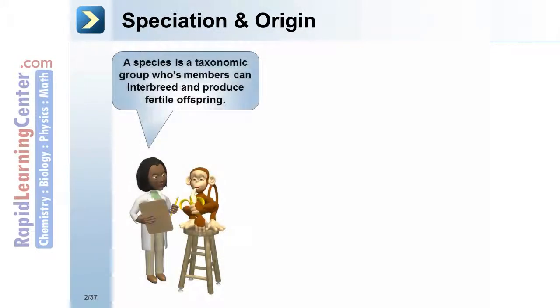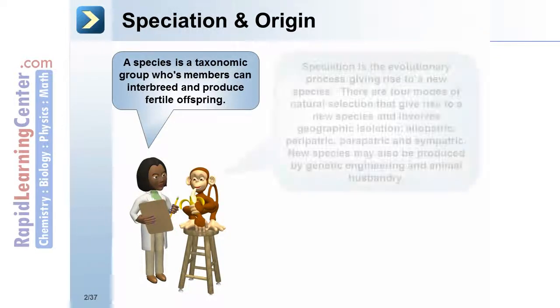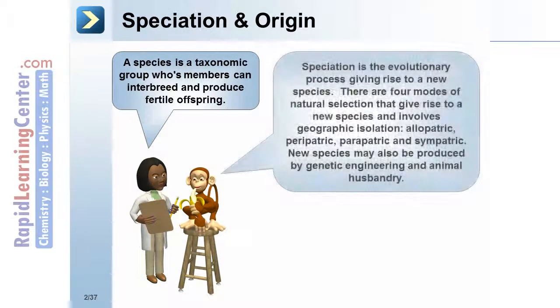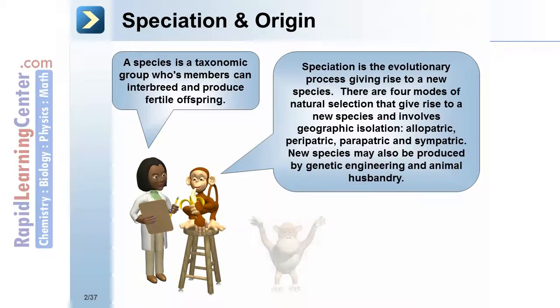A species is a taxonomic group whose members can interbreed and produce fertile offspring. Speciation is the evolutionary process giving rise to a new species.